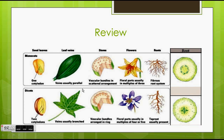The stem of monocots — the vascular bodies, being the xylem and the phloem — are in a scattered arrangement. While in the dicots, the vascular bodies are arranged in a ring structure.